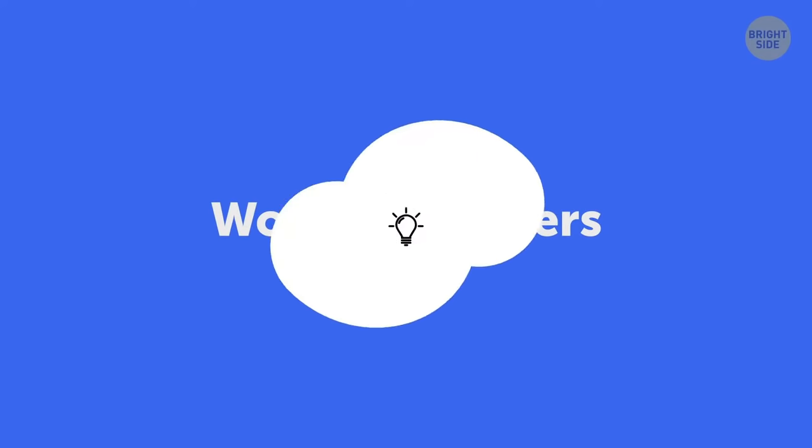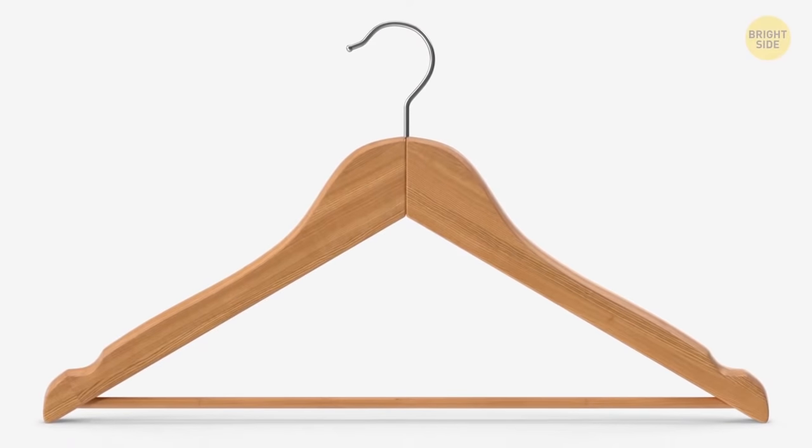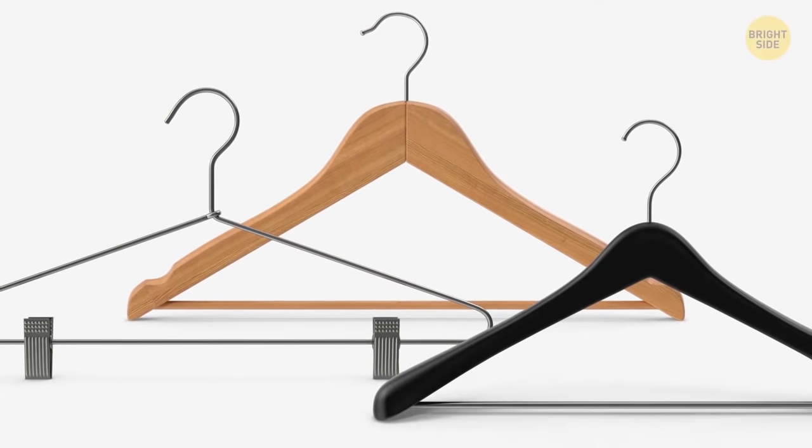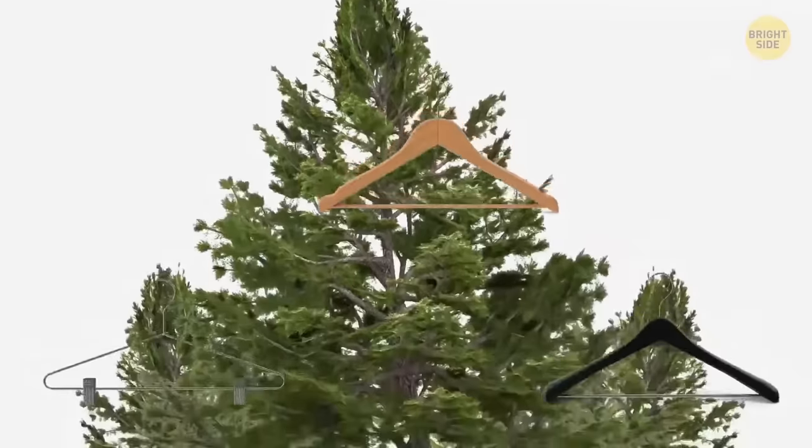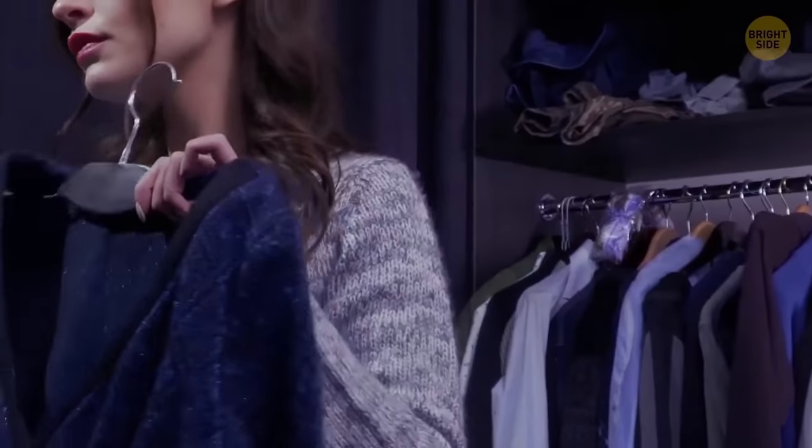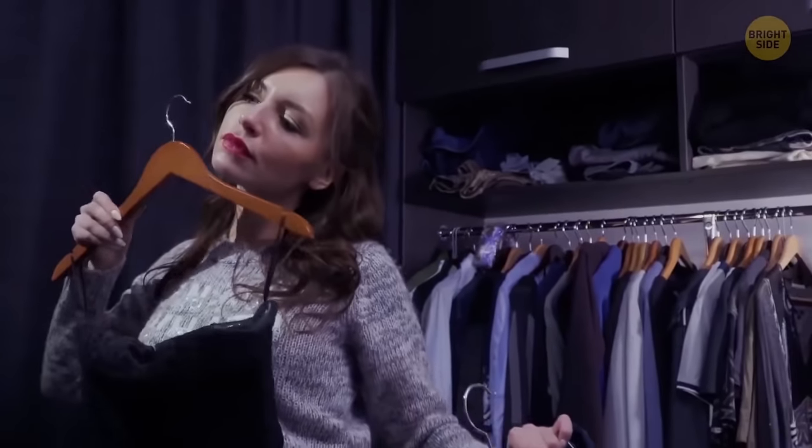Wooden hangers might look more stylish and sturdy than metal or plastic ones, but it's not all about looks. The very first wooden hangers were made from cedar, which is an effective natural insect repellent. The smell scared off moths and saved clothes.